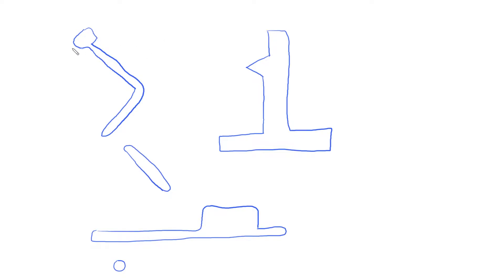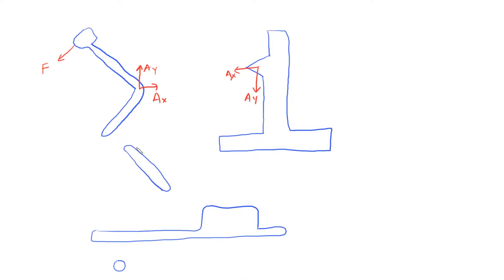Let's apply the forces. We know a force F goes along here, which is perpendicular to the handle, and we know there's a pin here, so we can say that this is A_y and this is A_x. By using Newton's third law, that would be A_x and A_y. There is a two-force member here, so I'm going to say this is R, and by Newton's third law, this must be R in that direction, and then we apply that on this free body diagram.